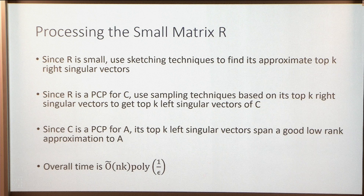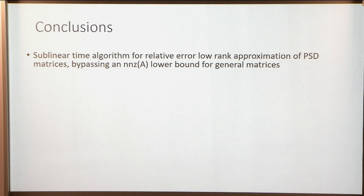The overall logic: reduce to a small √N by √N matrix R, run input sparsity time sketching on R to find its top-K singular vectors, use those to find top-K directions in C (since R is a PCP for C), then since C is a PCP for A those directions give a good low-rank approximation to A. The algorithm runs in N·K·poly(1/ε) time overall.